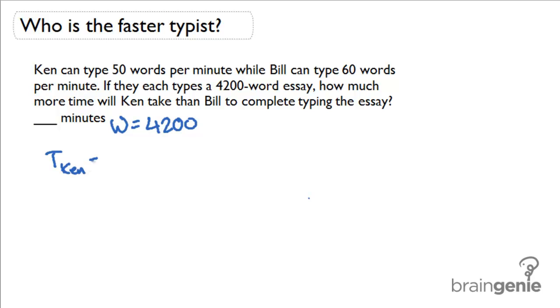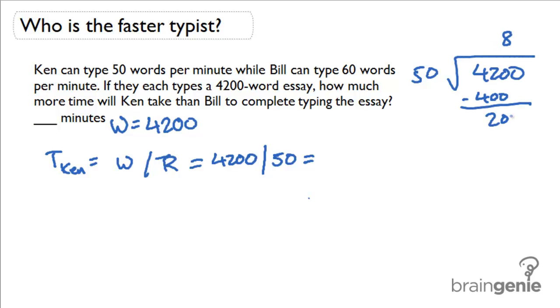So the time for Ken is equal to our work divided by our rate—is equal to 4,200 divided by 50. And what do we get? 4,200 divided by 50, we get 84, so 84 minutes.